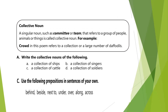Now, kinds of nouns. There are common, proper, material, collective, and abstract nouns. Here we are concerned with collective nouns — a collective noun refers to a group of people, animals, or things. Examples: class, committee, team. In the poem, 'crowd' refers to the large number of daffodils, so 'crowd' is used as a collective noun here.